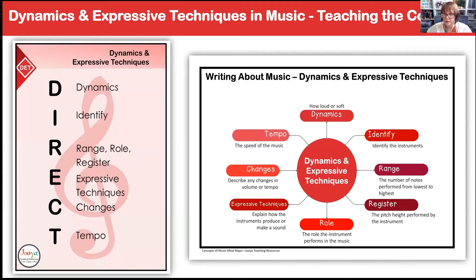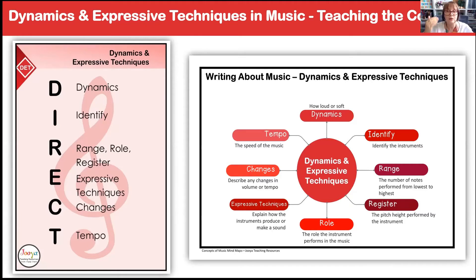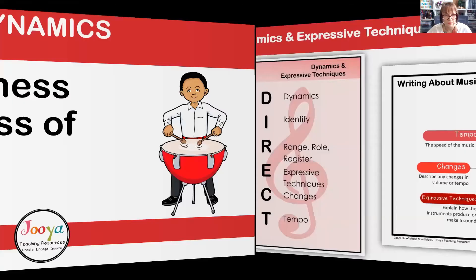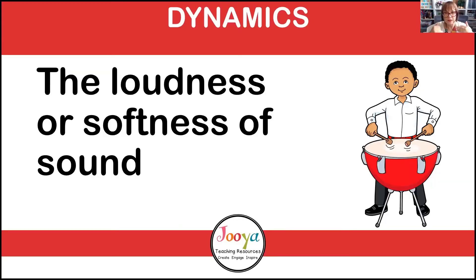The things you need to talk about if you're doing a dynamics and expressive techniques question - the six things you need are: dynamics, identify the instruments, range/role/register of those instruments, expressive techniques, what are those instruments performing, are there any changes (changes in technique, tempo, or dynamics), and what is the tempo. All those things are essentially all those lovely Italian terms, as I mentioned at the beginning of this video.